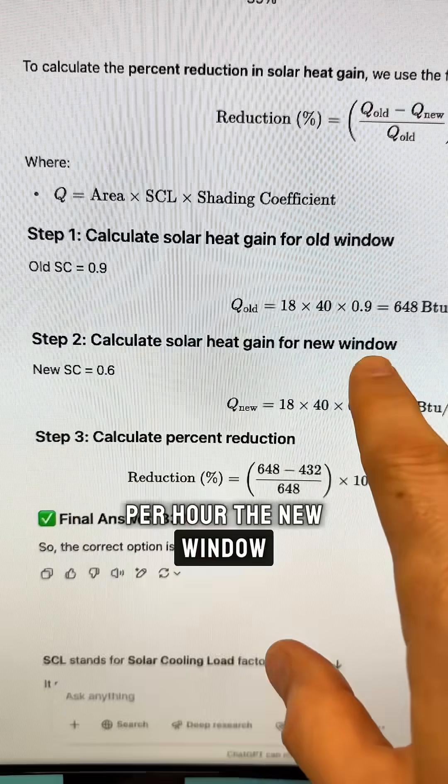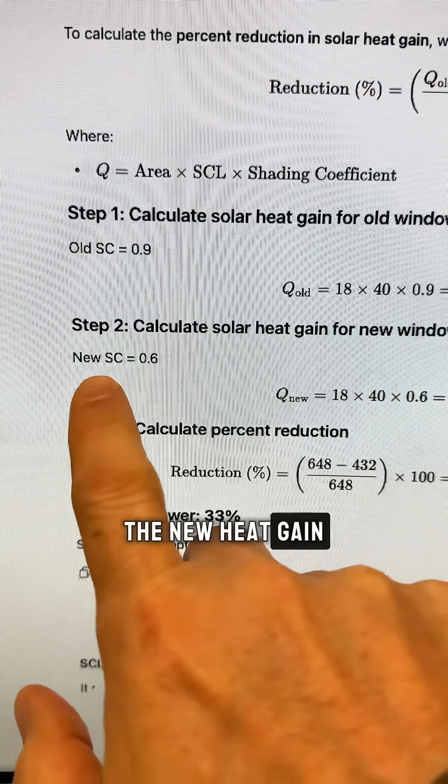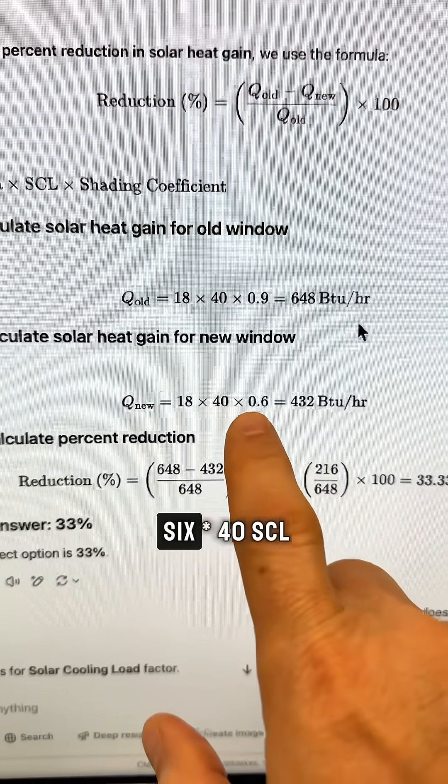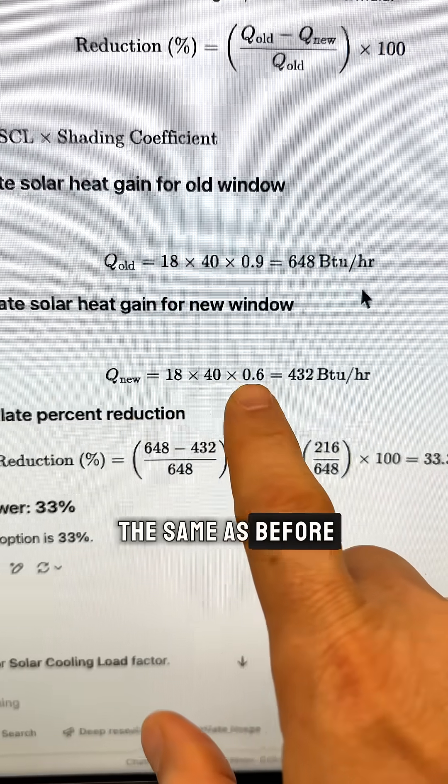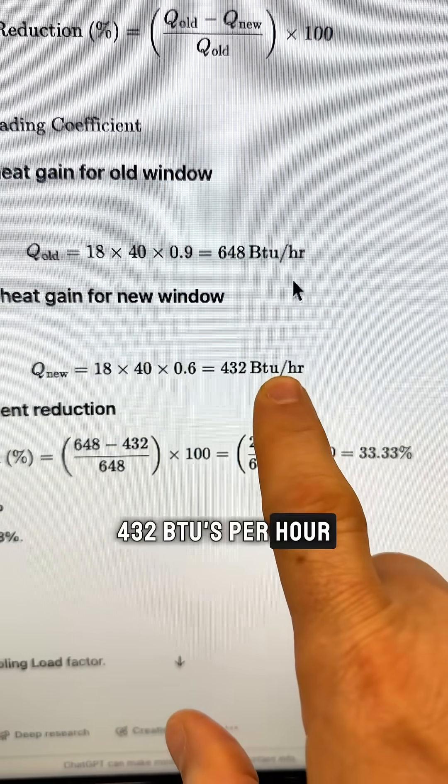The new window, the new heat gain: shading coefficient is 0.6 times 40 SCL times 18. So those two are the same as before, 432 BTUs per hour.